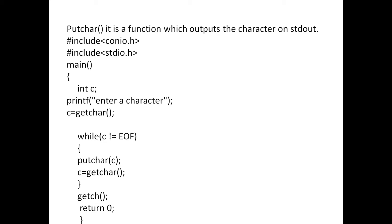While c is not equal to end of file, it checks whether c is equal to end of file or not. Otherwise it will putchar c, then c is equal to getchar again. If it reaches end of file it will come out from the while loop, otherwise it will continue. So till it reaches end of file — end of file means Ctrl+Z — whenever it encounters Ctrl+Z the loop exits, and whatever input you gave will echo on the screen with the help of the putchar function.